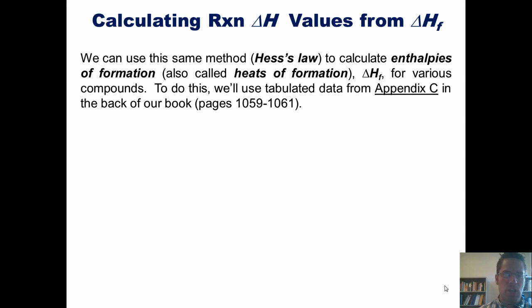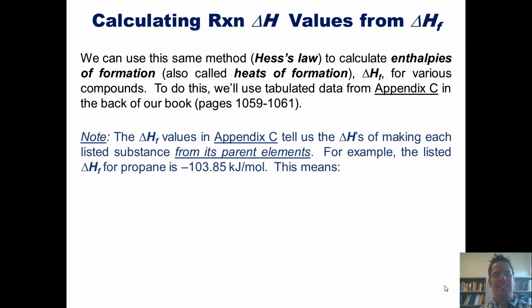From the examples we just did, we've seen that delta H of formation values in Appendix C tell us the individual enthalpies of making each listed substance from its parent elements. For NO2 and sodium bromide, the enthalpy values we calculated are the actual values of energy transfer when those substances are formed.